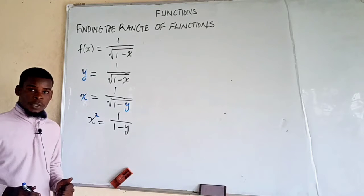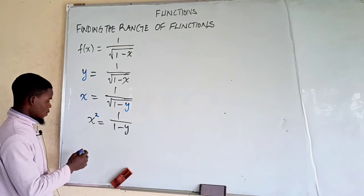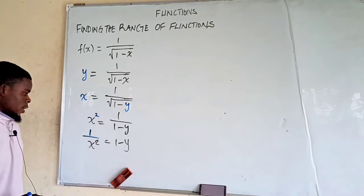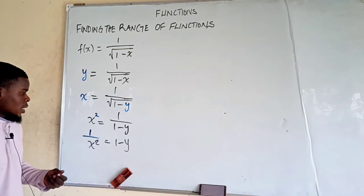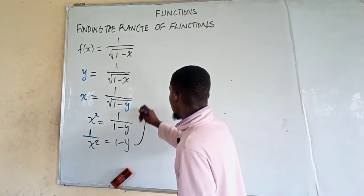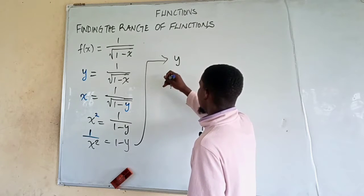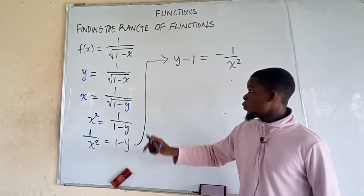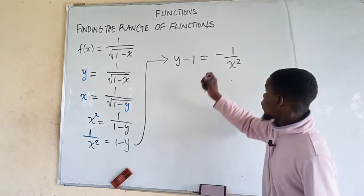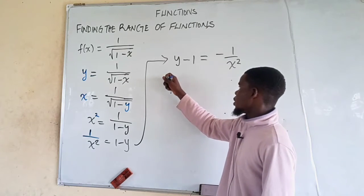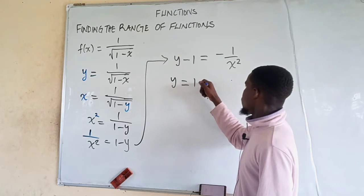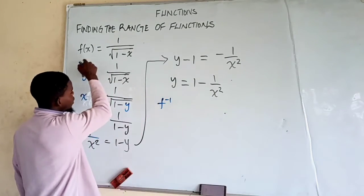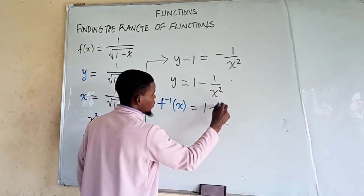Now we make y the subject by taking the reciprocal of both sides, giving us 1 over x squared equals 1 minus y. Then we multiply both sides by negative 1, which gives us y minus 1 equals negative 1 over x squared. Adding 1 to both sides gives us y equals 1 minus 1 over x squared. So this new y is the inverse of the given function — f inverse of x equals 1 minus 1 over x squared.